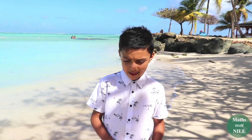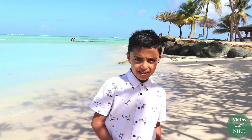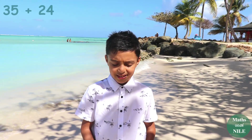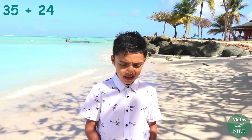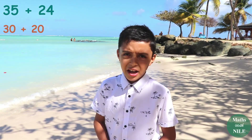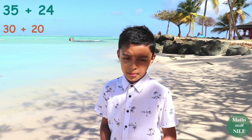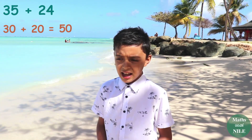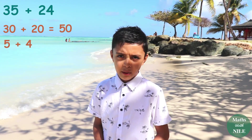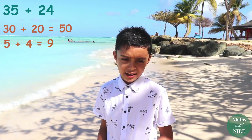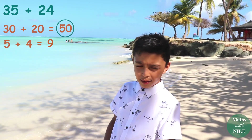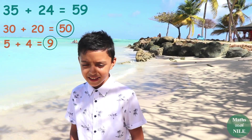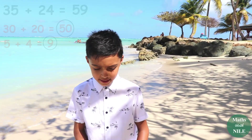So the first question is going to be 35 plus 24. So we do 30 plus 20, which is 50. And 5 plus 4, which is 9. So then we do 50 plus 9, which is 59. Excellent, nice. So that's what we would do for addition.